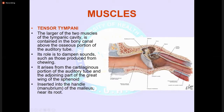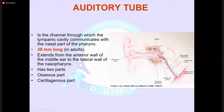The tensor tympani arises from the cartilaginous portion of the auditory tube and greater wing of the sphenoid and inserts into the handle of the malleus. The auditory or Eustachian tube is the channel through which the tympanic cavity communicates with the nasal part of the pharynx, 45 mm long, extending from the anterior wall of the middle ear to the lateral wall of the nasopharynx. It has two parts: osseous and cartilaginous.